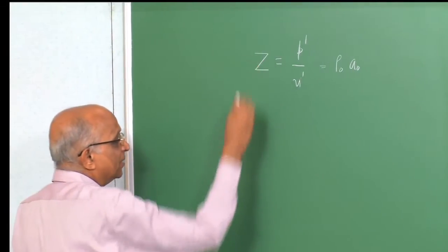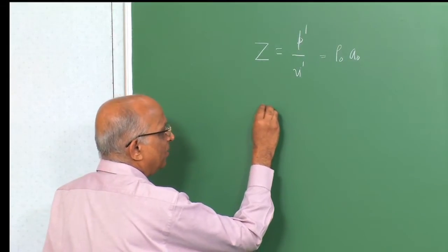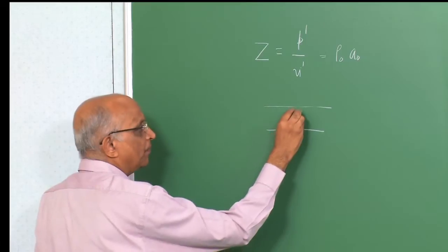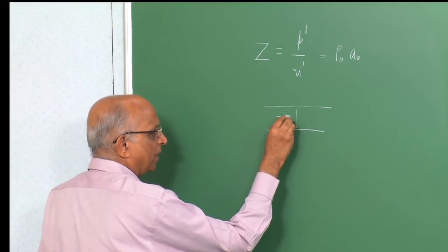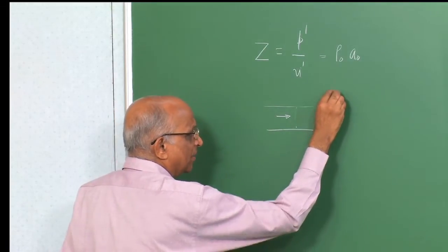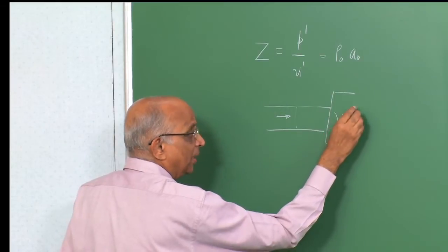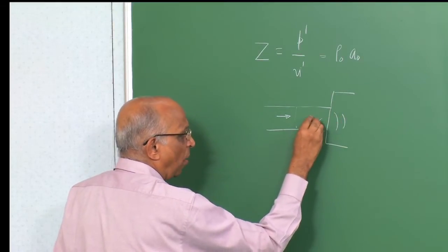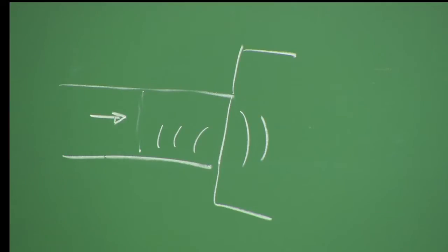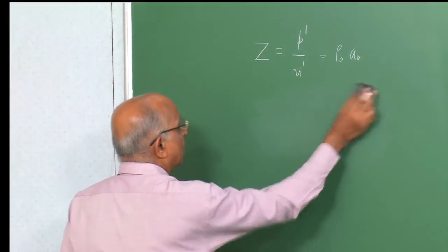The problem we are considering is: suppose I have some medium and into this medium a wave is propagating, and at the end it meets some other medium — how much of this wave gets transmitted into the second medium and how much gets reflected back into the first medium? Before we do that, let us get a feel for the impedance values.